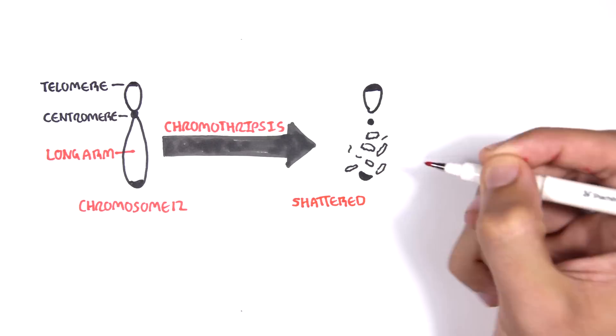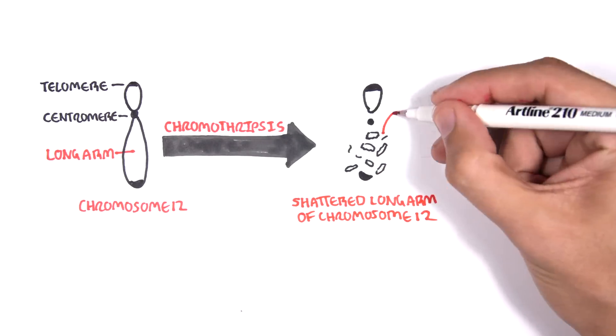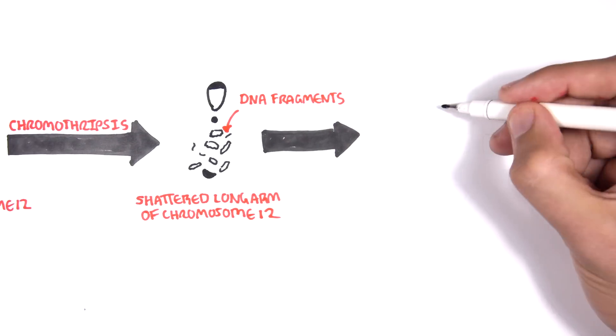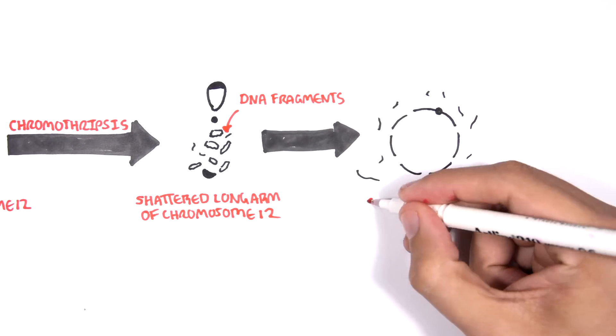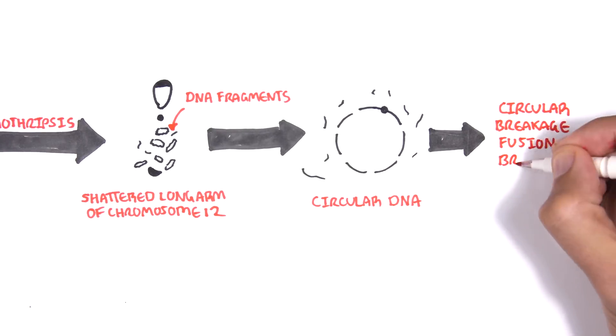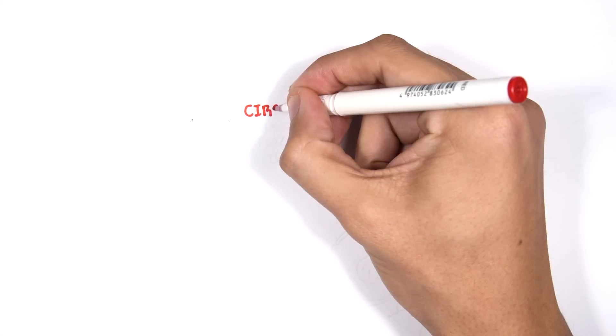When chromosome 12 shatters, the resulting DNA fragments are free to form an independent circular structure, with dozens of breakpoints completely rearranged and sometimes inverted. It is at this point that the stage is set for circular breakage fusion bridge, the process that drives the growth of neochromosomes.